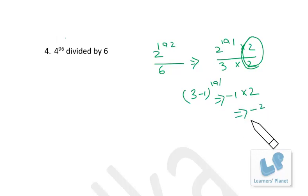If the remainder is negative, then you can deduct this number from 6, so 6 minus 2 is 4. Your final remainder is 4 when 4 raised to 96 is divided by 6.